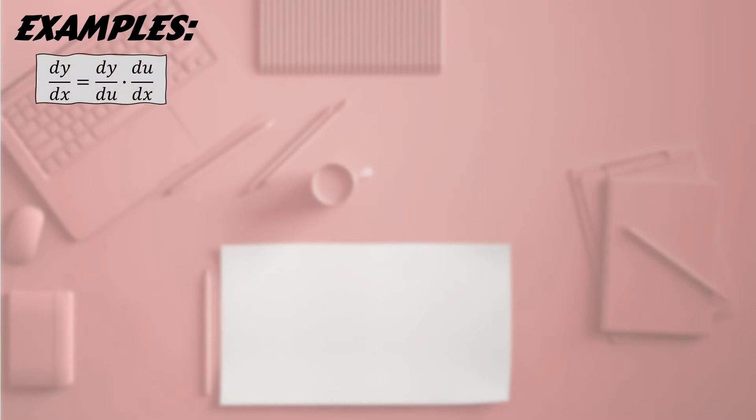Let's have the first example. Let us use this given formula to find the derivative of y with respect to x. Find dy/dx if y = 4u² and u = x² + 12x. For us to find the derivative of y with respect to x, we will first find the derivative of y and the derivative of u.